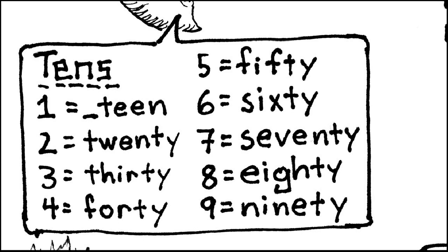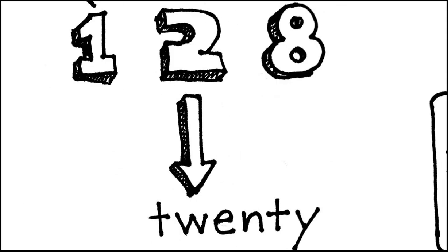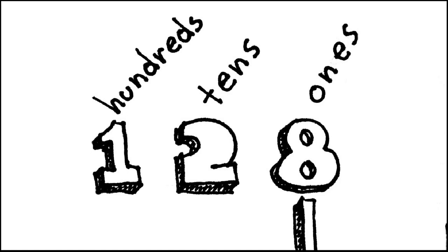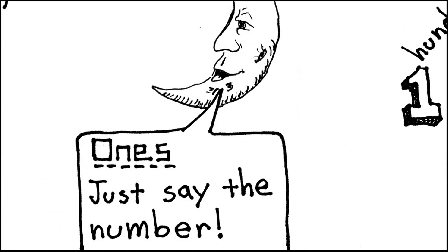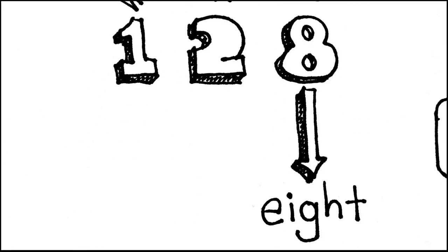To say numbers in the tens place, you do need to memorize this list. Once you have it memorized, you just look at the digit. We see a two in the tens place, and we know we have to say twenty. Then we come to the ones place, which is actually the easiest one, because you just say the number. We see an eight in the ones place, so we just say eight.